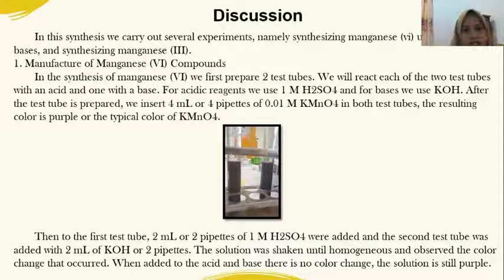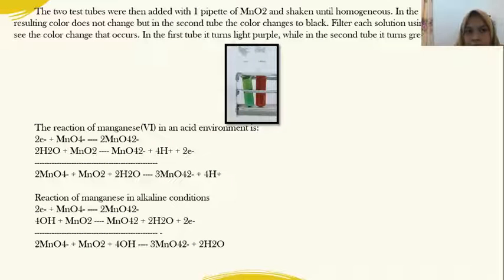Then, the first test tube: 2 milliliters or pipette of 1 molar H2SO4 were added, and the second test tube was added with 2 milliliters of 2 molar KOH. To the test tubes, we then added one pipette of MnO2 and shook it until homogeneous.